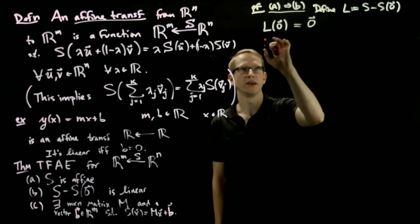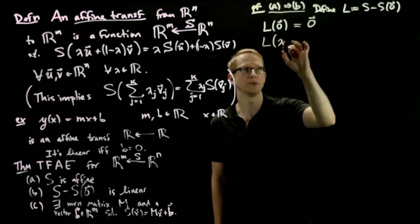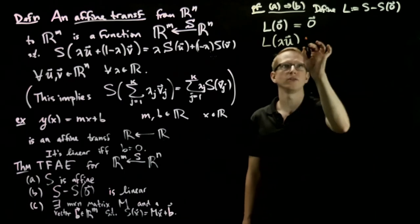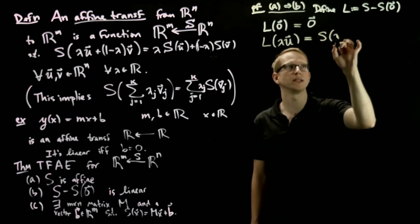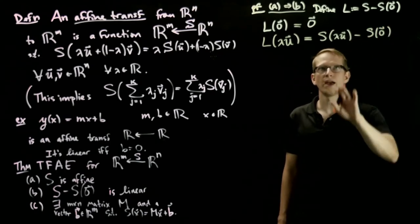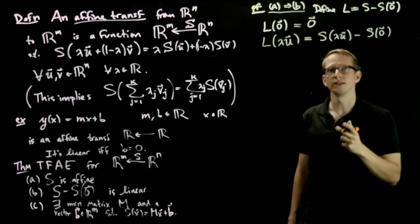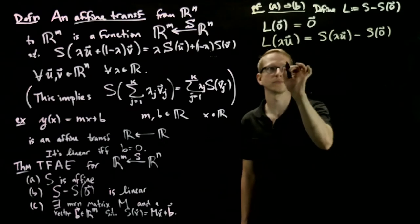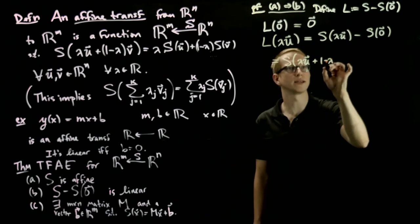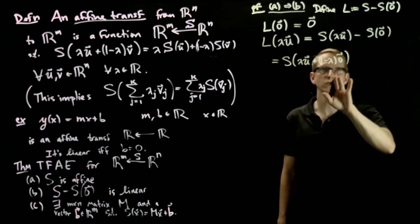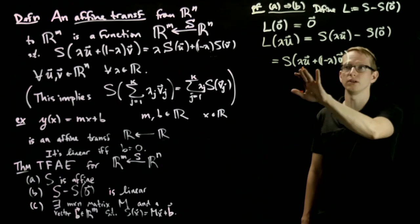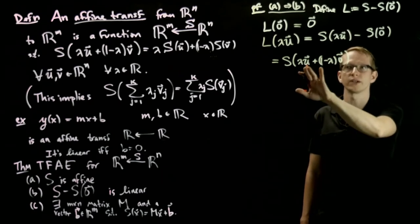Second, if we take a coefficient λ, any real number λ, and if we take a vector u that's inside of R^n, then by this definition, this is s(λu) - s(0). And this is an affine combination of λu and 0. This also equals s(λu + (1-λ)·0), right? The 0 vector is in the domain of s, so I can multiply it by any number and still get 0.